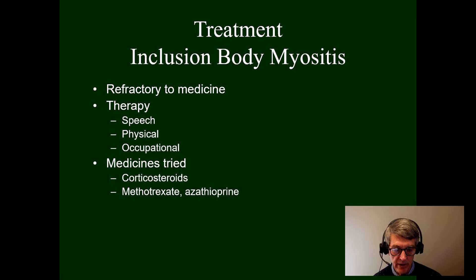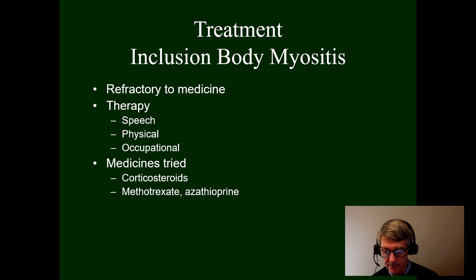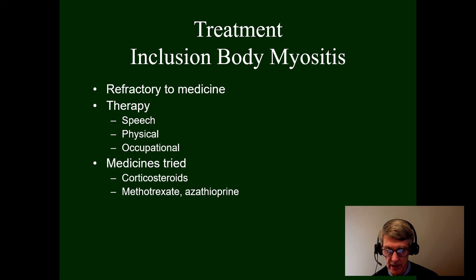Inclusion body myositis is much more refractory to treatment. A trial of corticosteroids with methotrexate or azathioprine may be initiated, but if not helpful, these would be withdrawn. Non-medicinal adjuncts are very important: speech therapy for dysphagia and reflux management, physical therapy for strengthening and fall prevention aids (canes, walkers, wheelchairs), and occupational therapy for daily living activities and hand strengthening.